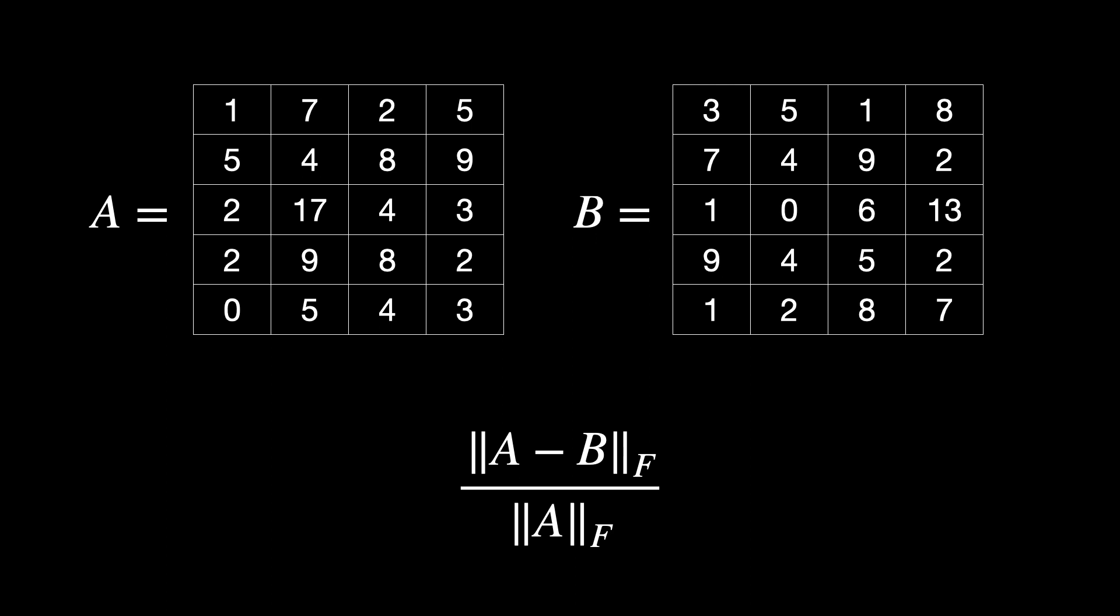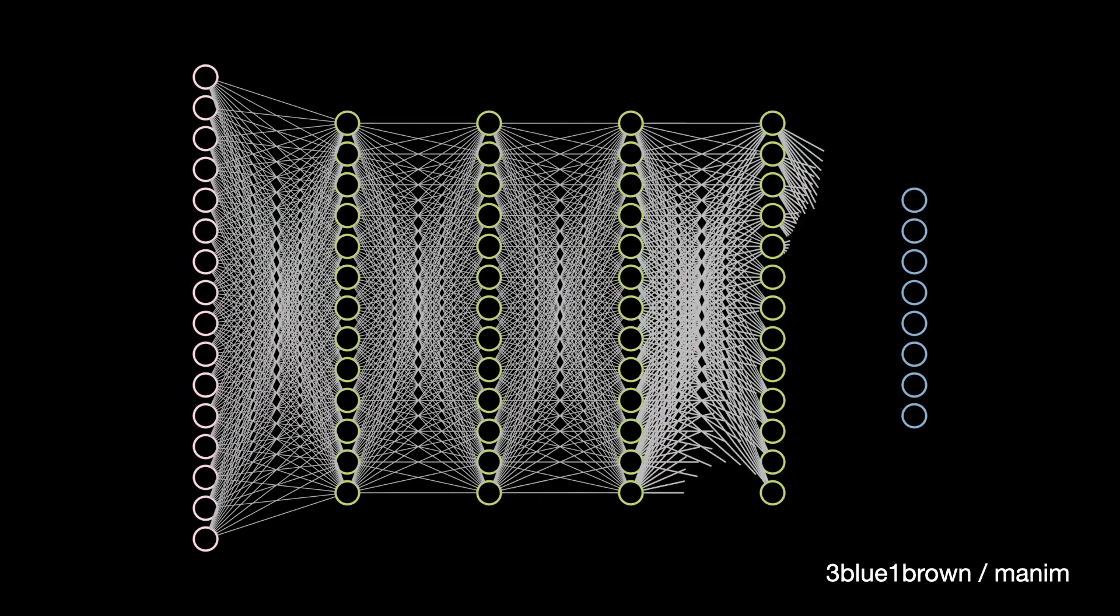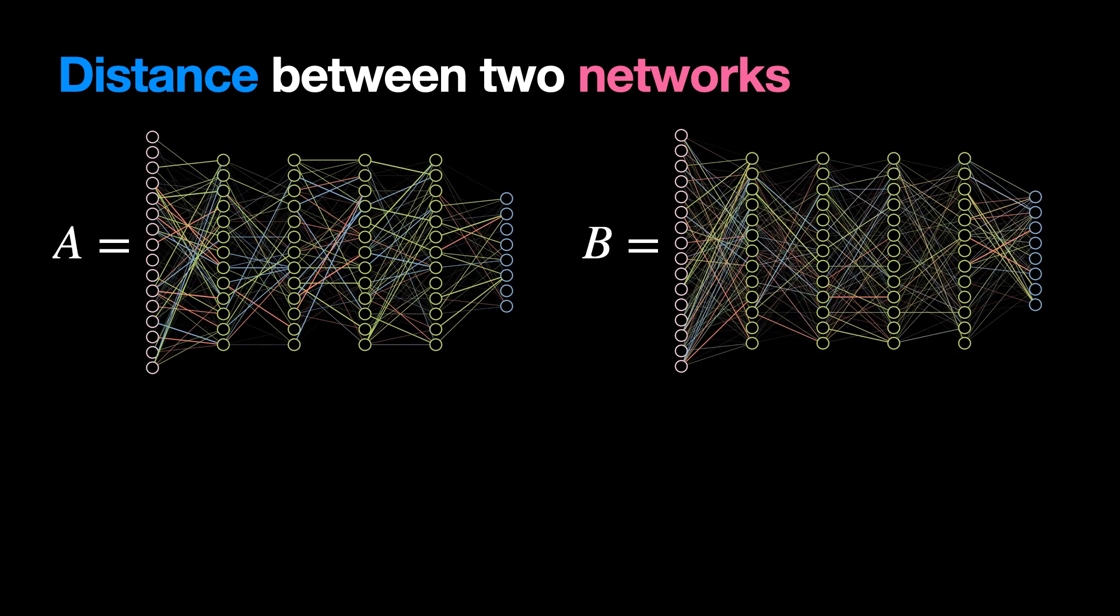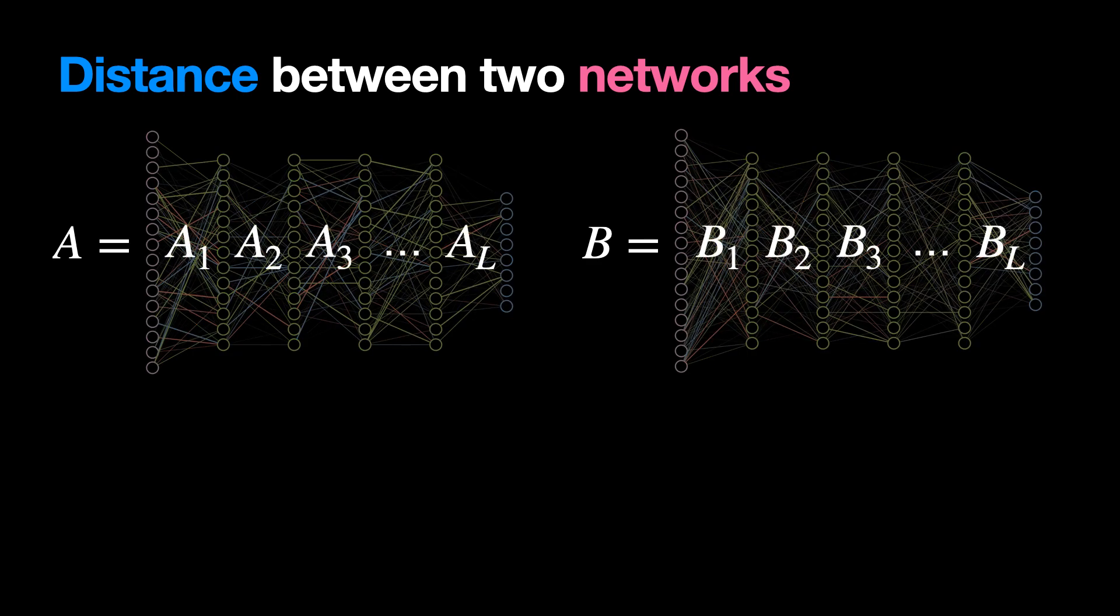But a neural network has a layered architecture. How can we measure the distance between two networks? Take a network A, another network B, label the matrices A1 to AL and B1 to BL, and for a given layer, we can measure the relative difference.